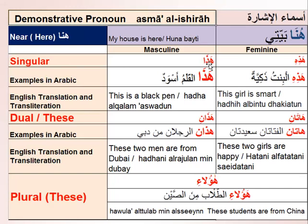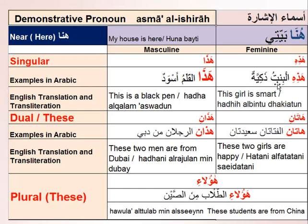To review: 'haaza' means 'this' for masculine singular, referring to something nearby — for example, 'haaza qalam aswad' means 'this is a black pen'. For feminine singular nearby, we say 'hazihi' — for example, 'hazihi albintu zakhiyatun' means 'this girl is smart'.